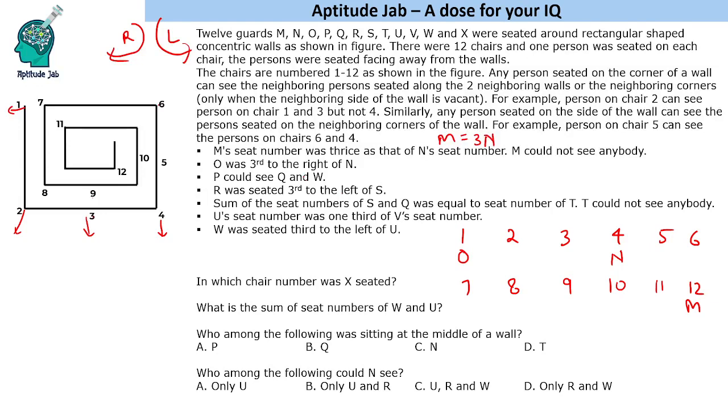P could see Q and W. We cannot determine from this statement. R was seated third to the left of S, this is a generic statement which cannot help us. Sum of seat numbers of S and Q was equal to the seat number of T. T could not see anybody. S plus Q is T and let us find out where could T be. There are only few people who cannot see anybody. Like 1, 2, 3, 4, 5, 6, 7, 8, even 9 can see this person. But 10 cannot see anyone because there is no one here. Even 11 cannot see anyone. They cannot see the outsiders because these are walls. S plus Q would be either 10 or 11 because 12 is already filled.